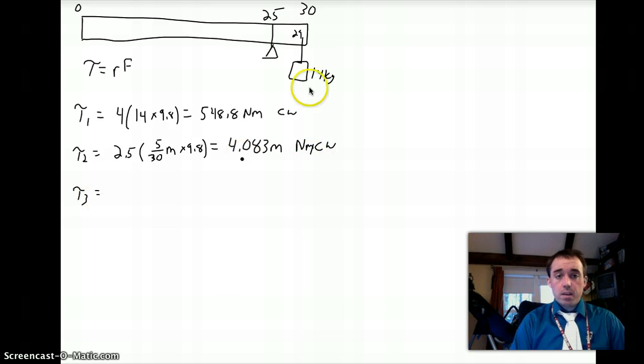Torque 3, my total distance is 25, that's overhanging, I use half of that, so that's 12.5. My total mass is 25 out of 30, whatever that percentage is, times M, times 9.8. 12.5 times 25 over 30 times 9.8 gives me 102.083 M as my variable, newton meters, counterclockwise.